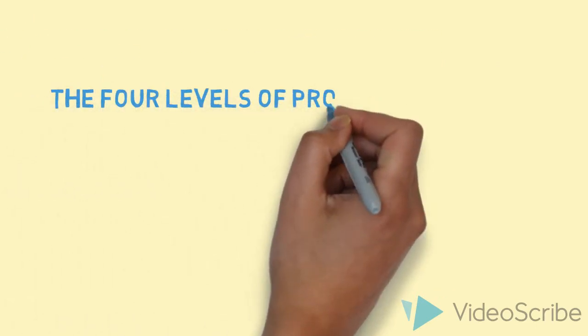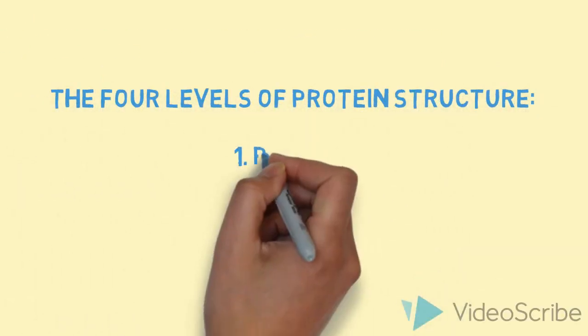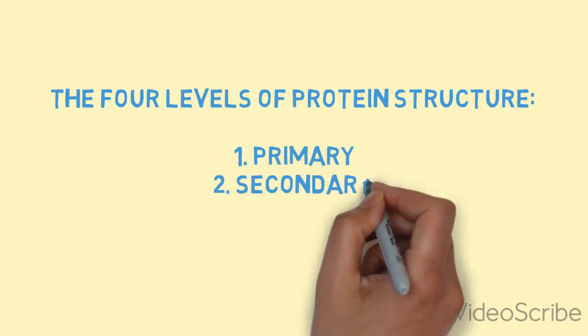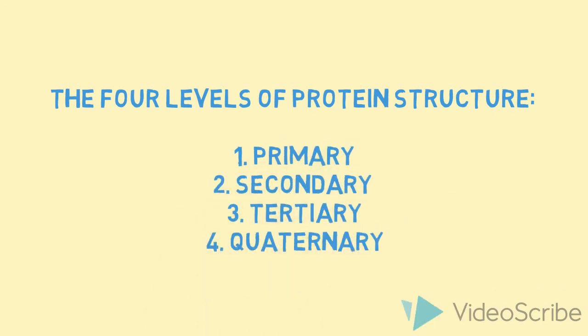The four levels of protein structures consist of 1, primary, 2, secondary, 3, tertiary, and 4, quaternary. Each we will cover in this video.